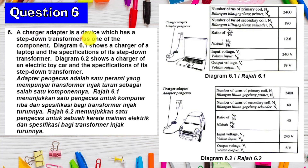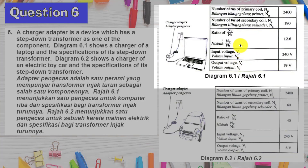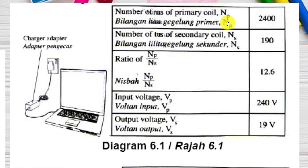Question 6: A charger adapter device has a step-down transformer shown in figure 6.1 — a laptop charger. Figure 6.2 shows the charger for an electrical toy car. For the charger: primary turns = 240, secondary turns = 190, ratio = 12.6, input voltage = 240V, output voltage = 19V. For the toy car: primary turns = 2400, secondary turns = 60, ratio = 40, input voltage = 240V, output voltage = 6V. Both are step-down transformers.